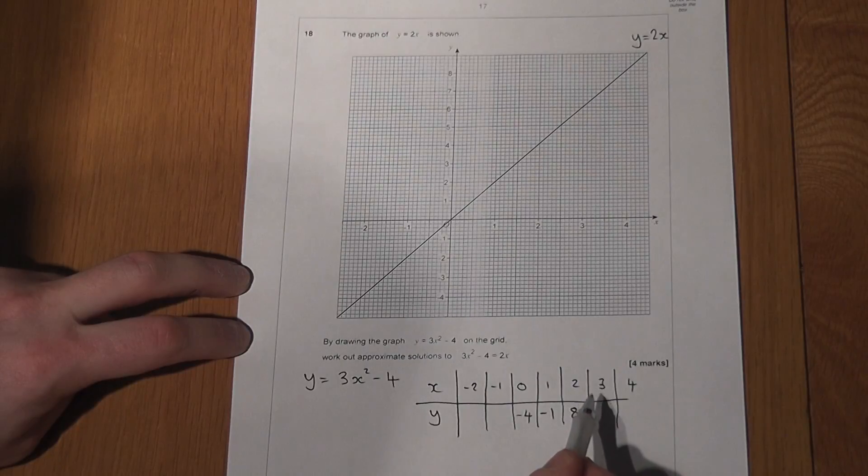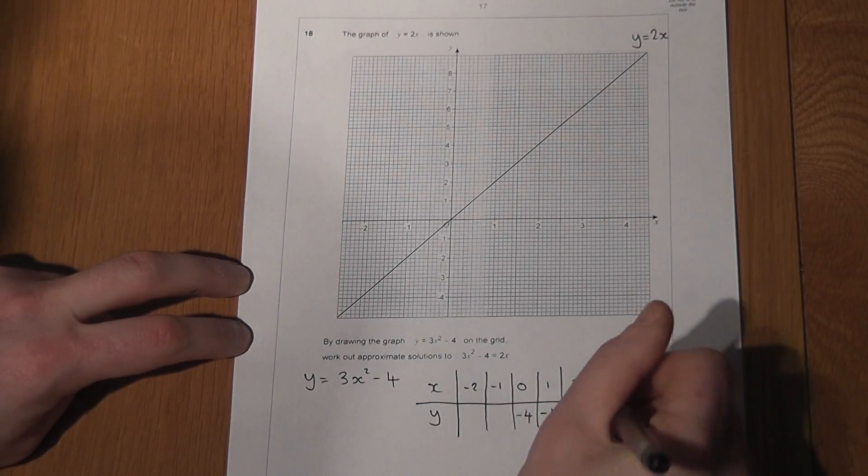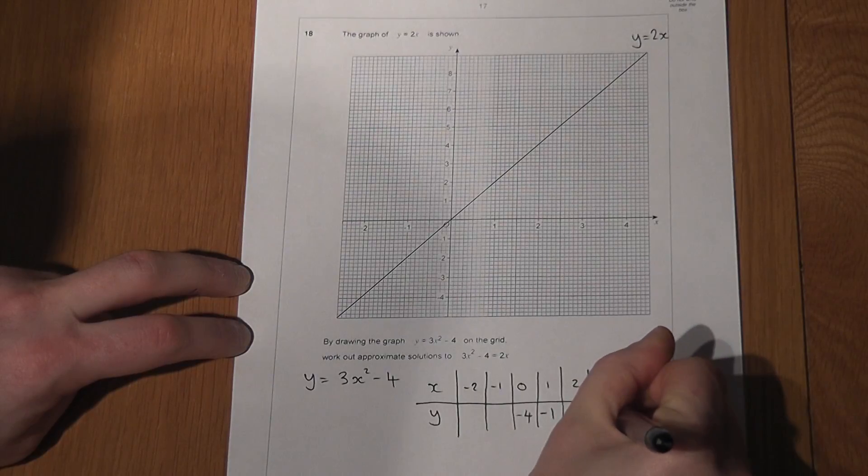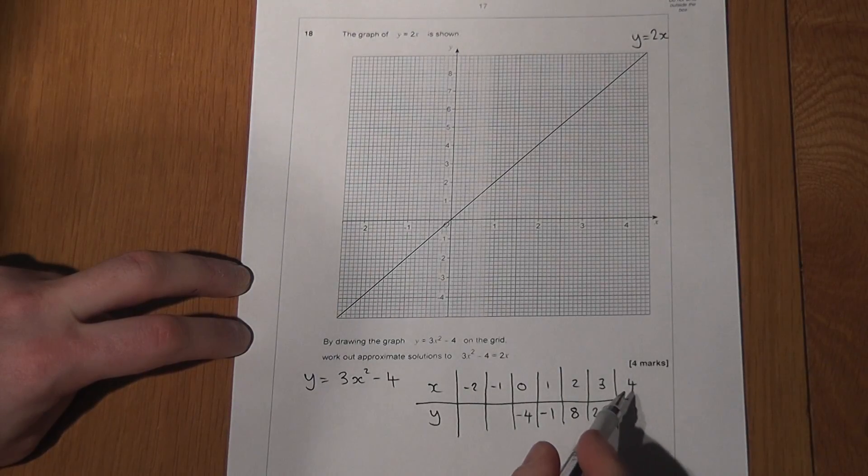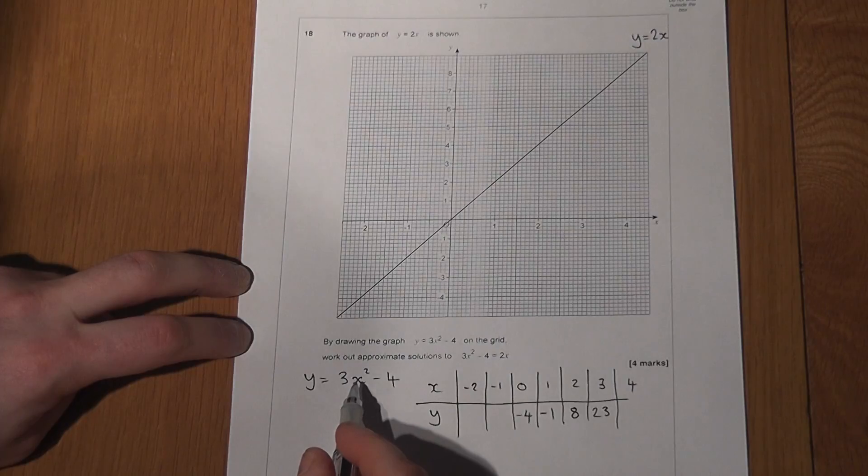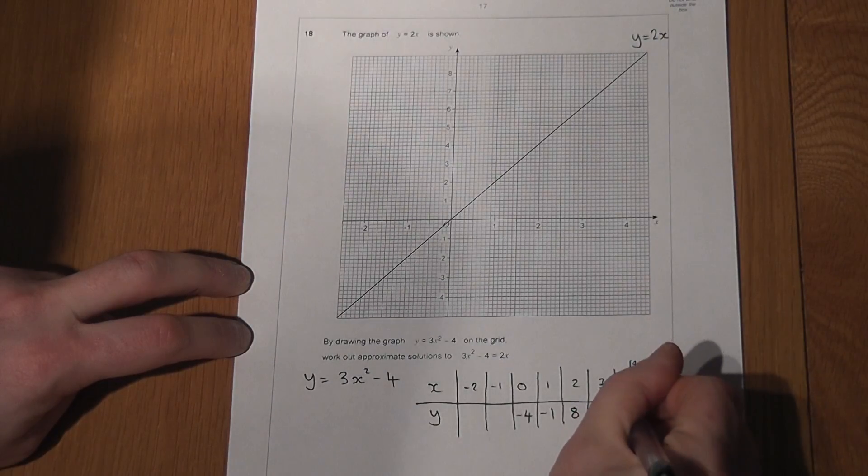I'll do the last two. 3 squared is 9, times 3 is 27, take away 4 is 23. 4 squared is 16, times 3 is 48, take away 4 is 44.